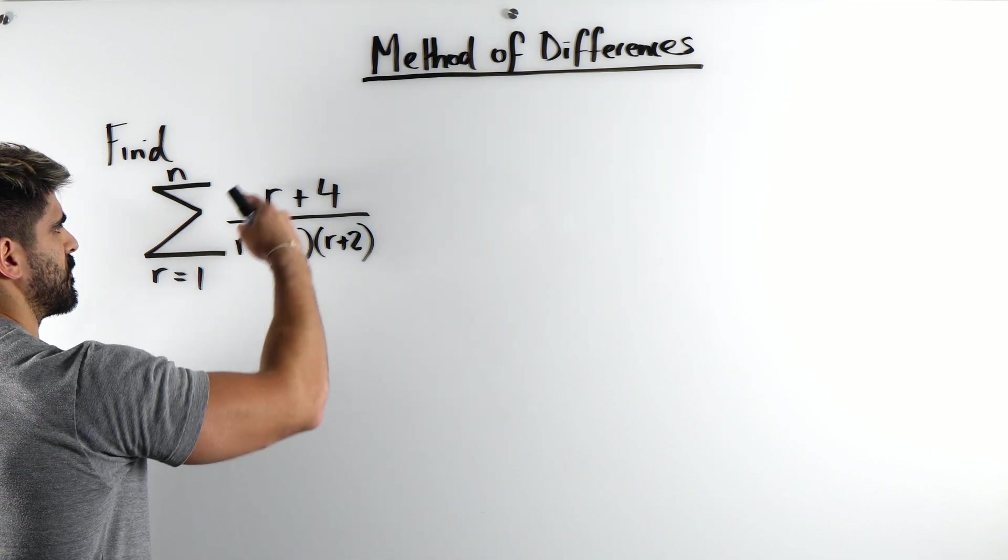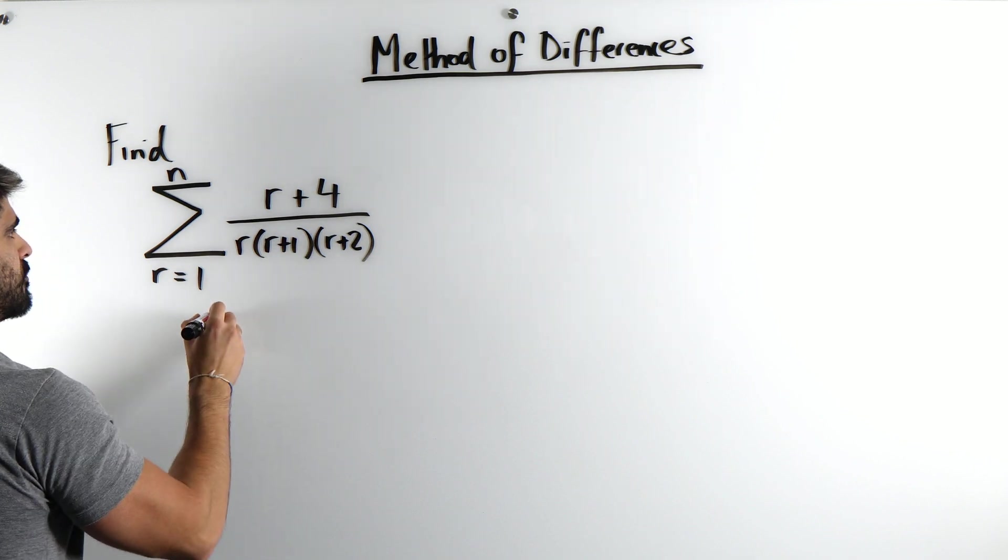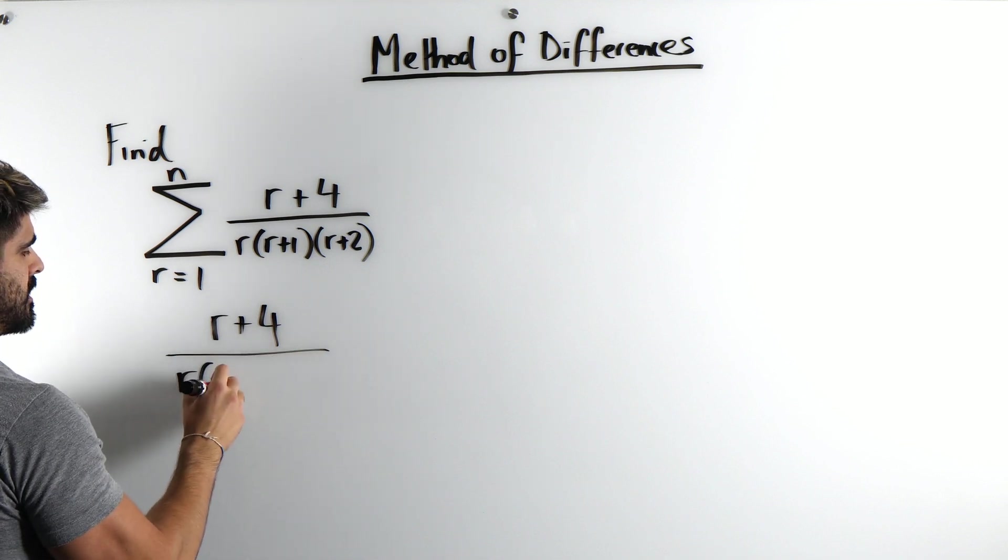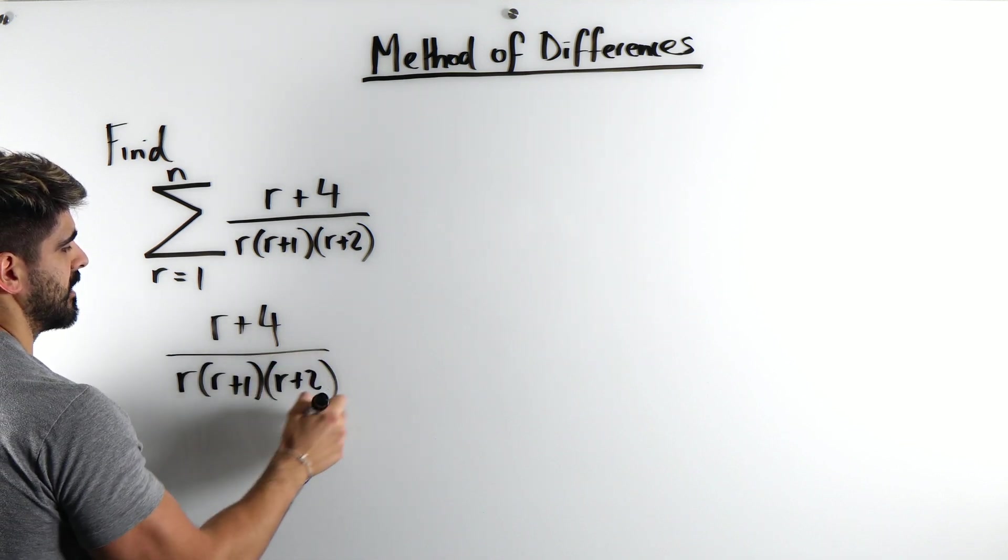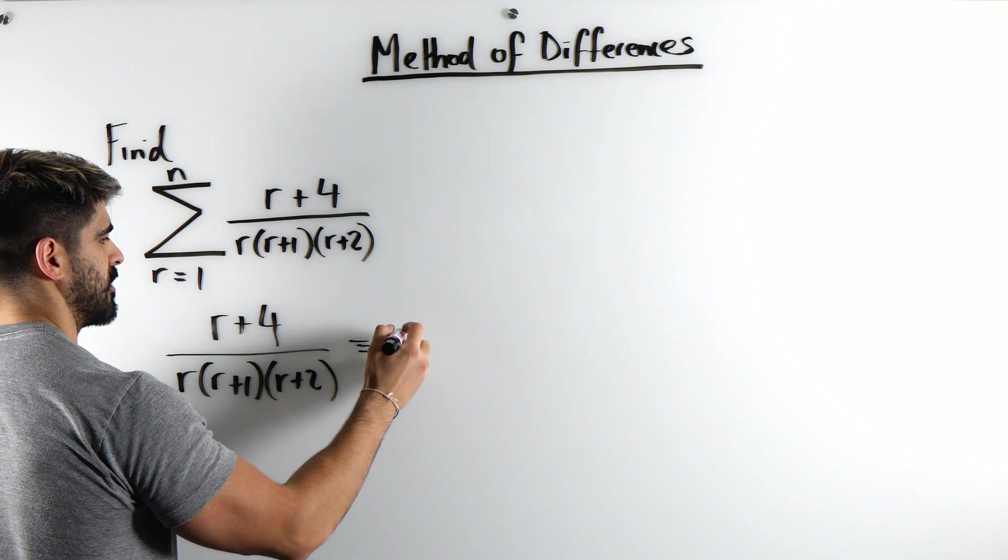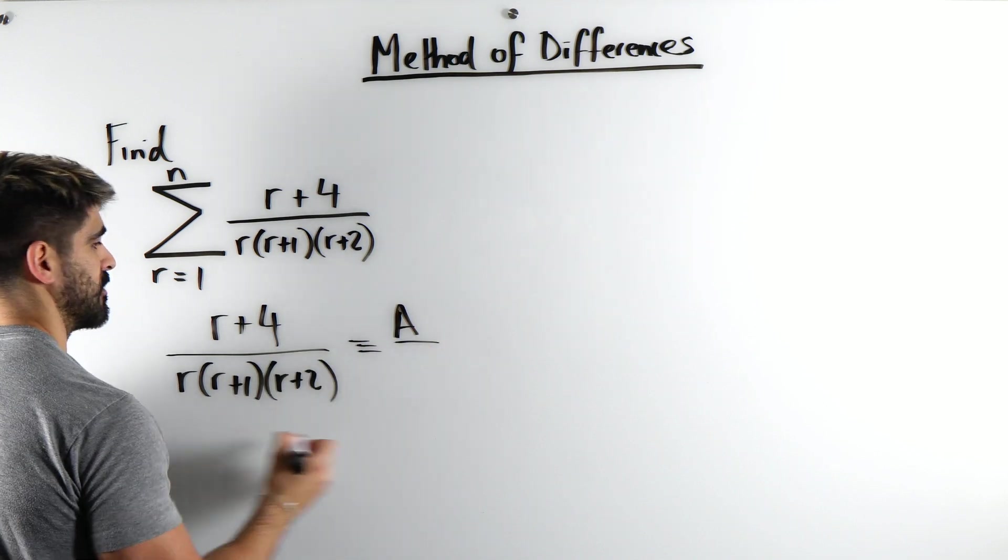So the method of differences is going to rewrite this and we're going to rewrite it using partial fractions. Now when the denominator is linear, meaning there's no squares, we can do a really cool trick. I'm going to show you guys how to do that, it's going to save you some time in your exam.